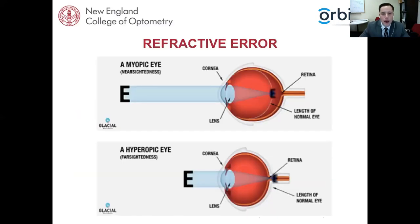Here's a simple schematic related to refractive error. For a nearsighted individual looking at infinity — parallel light — the light converges in front of the retina. For a hyperopic eye, the light converges behind the retina. These are very basic concepts related to refractive error.